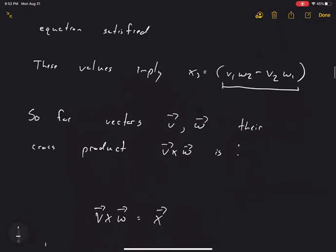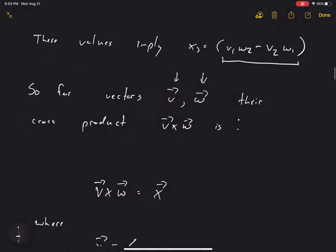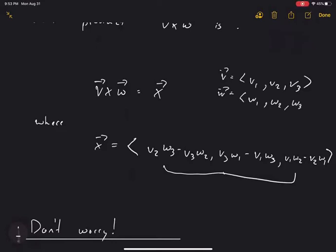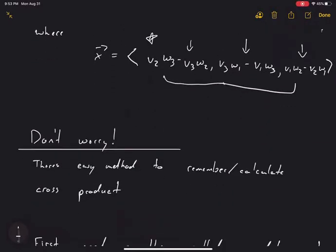To recap: given vectors V = (V1, V2, V3) and W = (W1, W2, W3), their cross product X has components determined by those of V and W. This formula looks really ugly — don't worry about memorizing it. There's an easier way to find the cross product, and we're going to see that our method gives the exact same result.